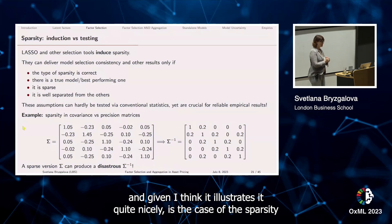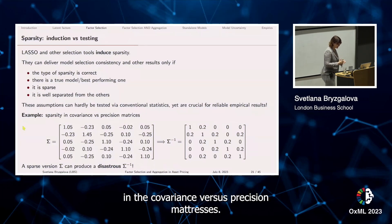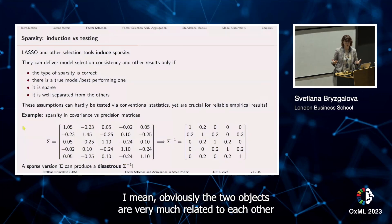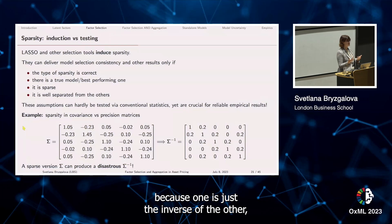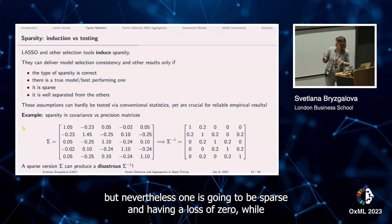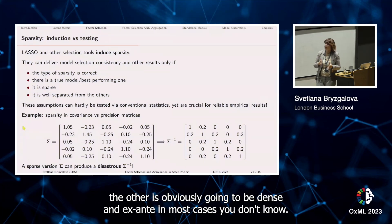Obviously the two objects are very much related to each other because one is just the inverse of the other, but nevertheless one is going to be sparse, having a lot of zeros, while the other is obviously going to be dense.